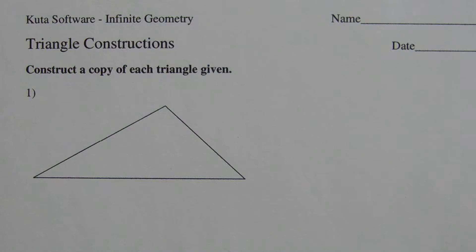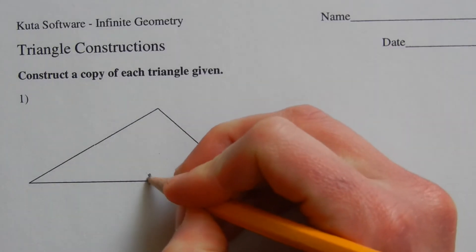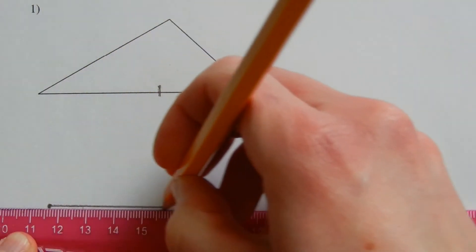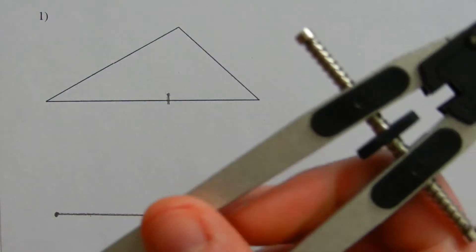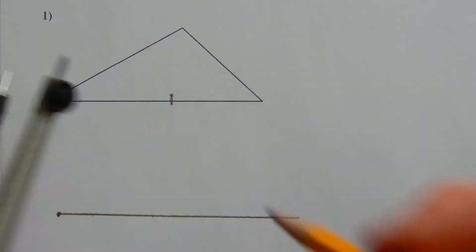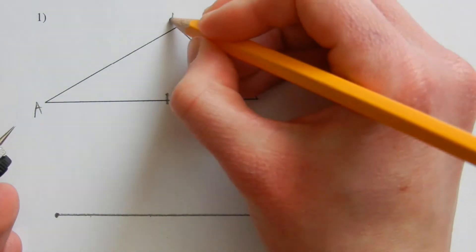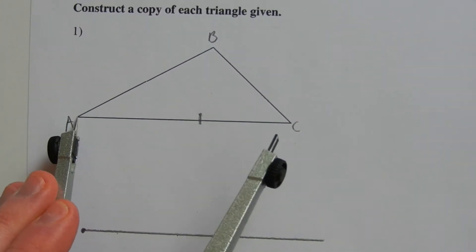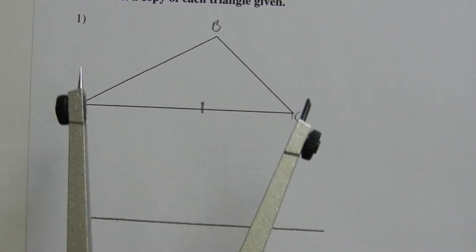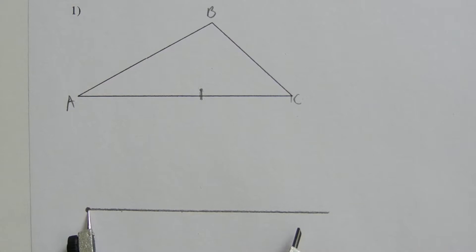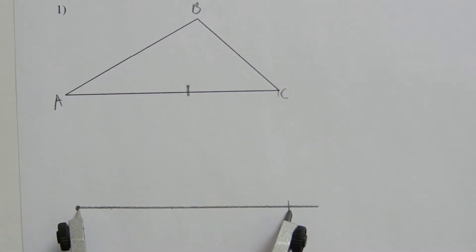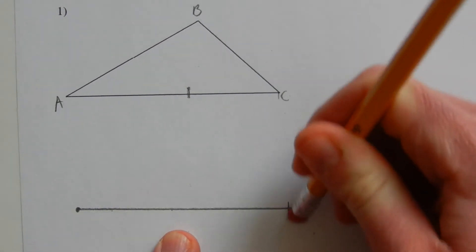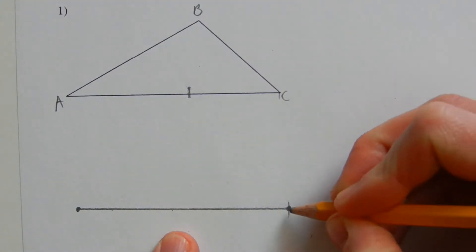For number one we're going to construct a copy of a triangle. Let's first start by making a congruent side — place our point and use a straight edge. In order to make that line congruent, we're going to place our compass on the edge of the point. We'll call this triangle ABC, so we're going to put our compass on point A and go all the way over to C. Once we have that measurement, we'll go to the line segment we've drawn and mark the length of AC onto our new line.